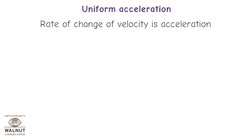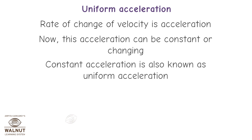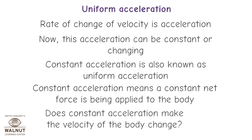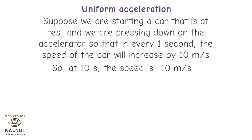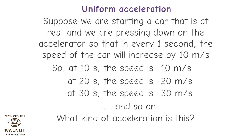Uniform acceleration: The rate of change of velocity is acceleration, and this acceleration can be constant or changing. Constant acceleration is also known as uniform acceleration, and it means a constant net force is being applied to the body. For example, if a car starts from rest and in every 1 second the speed increases by 10 m/s — at 10 s the speed is 10 m/s, at 20 s it is 20 m/s, at 30 s it is 30 m/s — this is uniform acceleration.